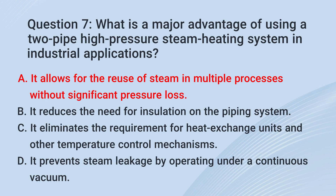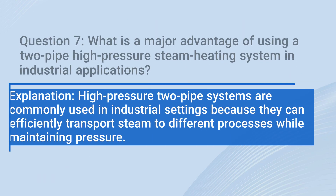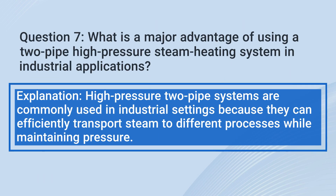The correct answer is A. It allows for the reuse of steam in multiple processes without significant pressure loss. High-pressure two-pipe systems are commonly used in industrial settings because they can efficiently transport steam to different processes while maintaining pressure.